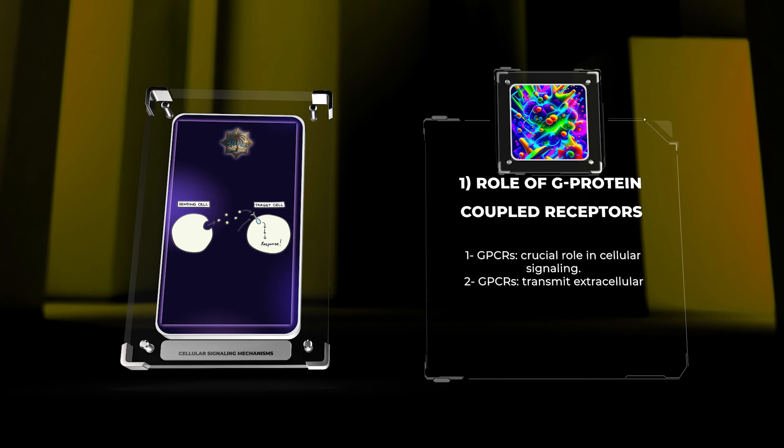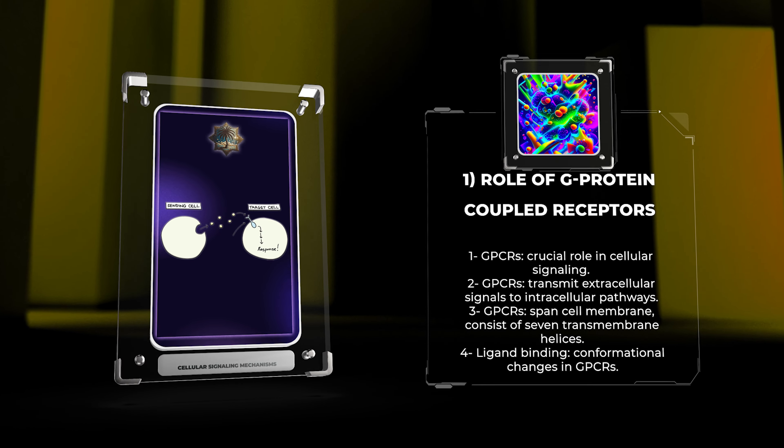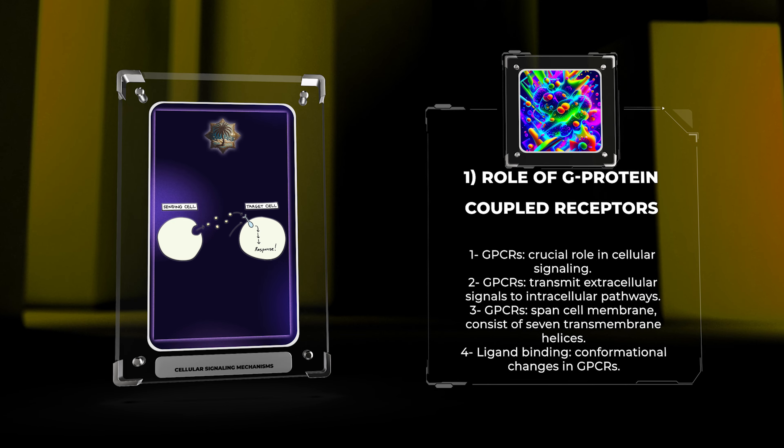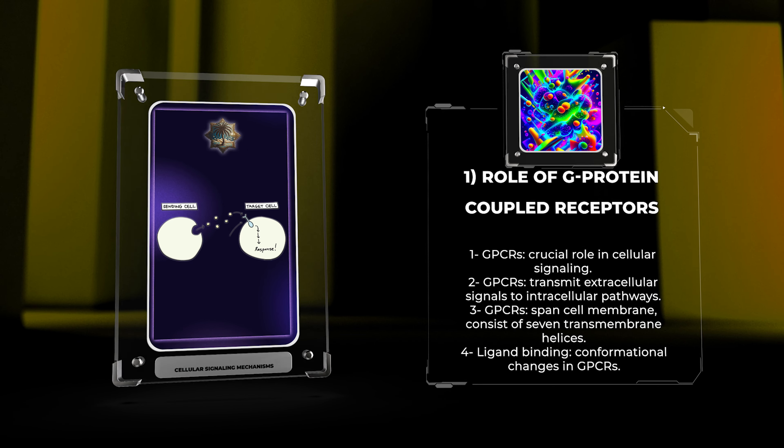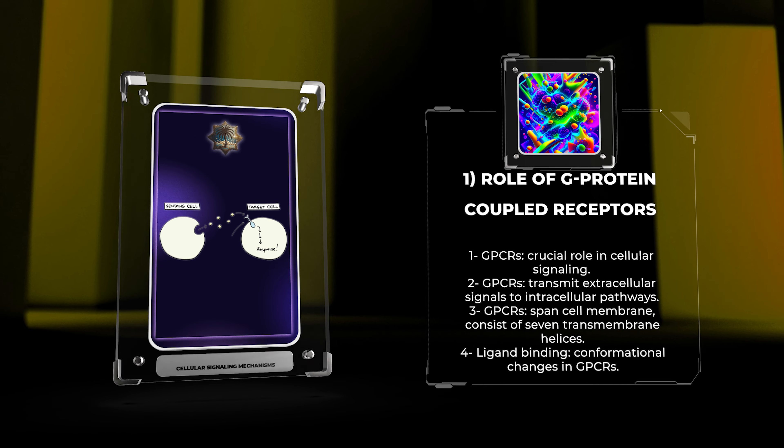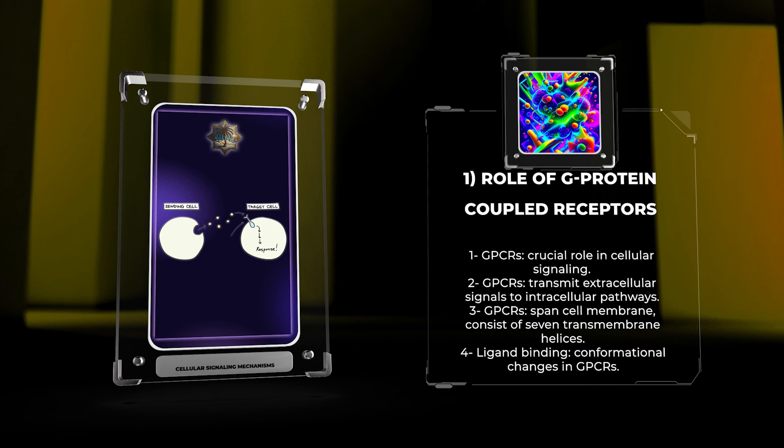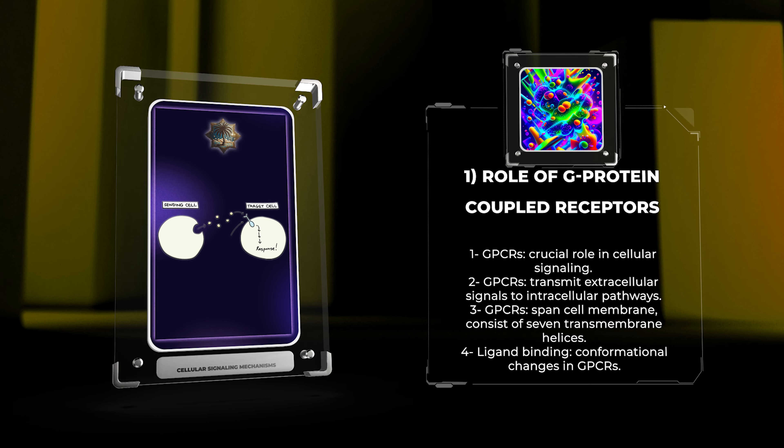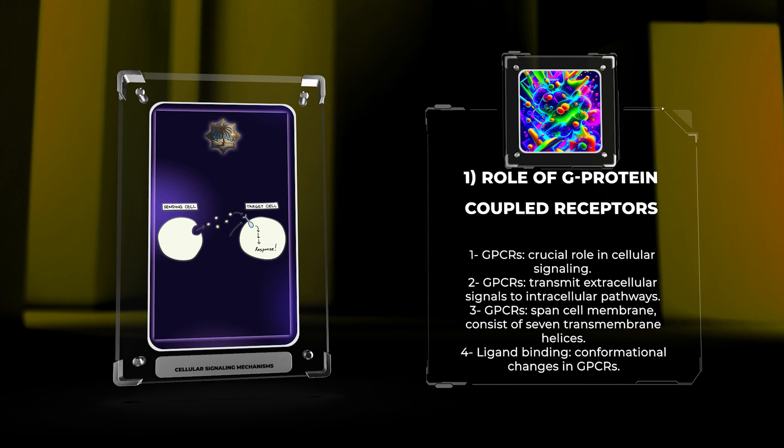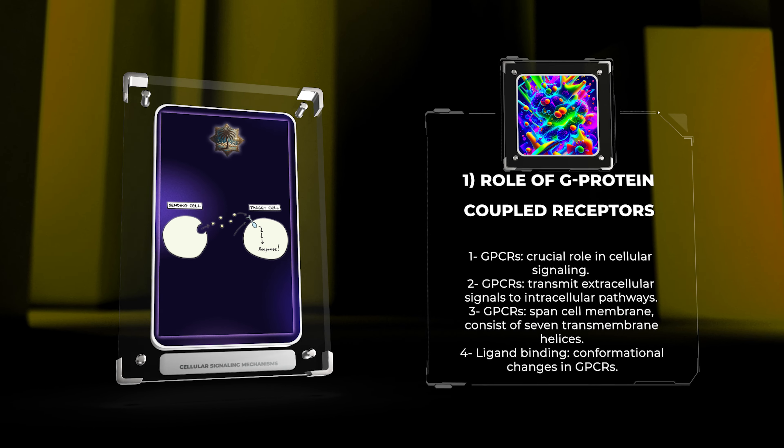G-protein-coupled receptors (GPCRs) play a crucial role in cellular signaling as they are responsible for transmitting extracellular signals to intracellular pathways. These receptors span the cell membrane and consist of seven transmembrane helices. Upon ligand binding, GPCRs undergo conformational changes and interact with heterotrimeric G-proteins, leading to the activation of downstream signaling cascades. These cascades can regulate a variety of cellular responses like neurotransmission, hormone secretion, and immune responses.